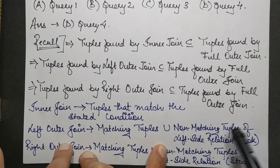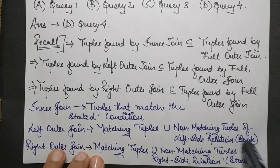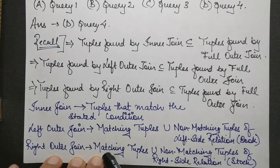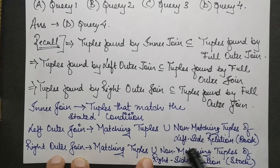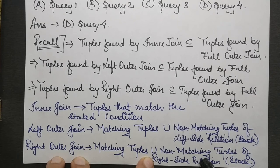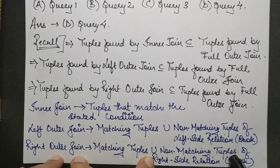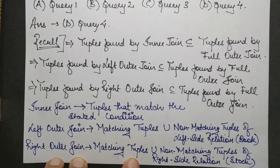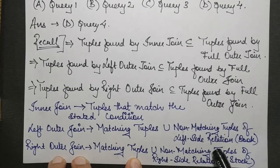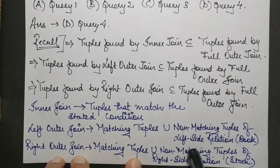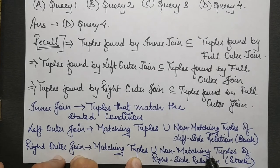For right outer join, you will get matching tuples plus the non-matching tuples of the right side relation, which is the stock relation. For full outer join, you get the matching tuples plus the non-matching tuples of the left-hand side relation plus the non-matching tuples of the right-hand side relation.